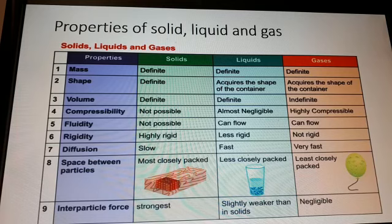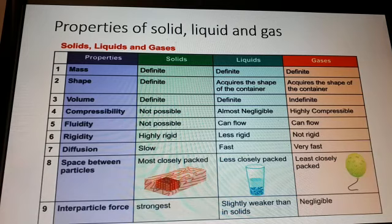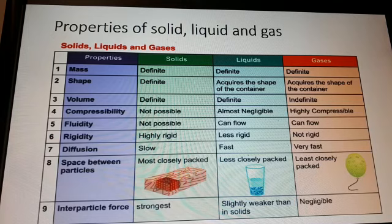In gases, particles are arranged randomly and are very far apart, moving randomly in all directions. There is negligible attractive force between particles. Particles fill up the container and can flow. Because particles are very far apart, they can easily be forced together, so gases are compressible. Substances that can flow — liquids and gases — are called fluids. This table shows the properties of solid, liquid and gas: mass, shape, volume, and compressibility.